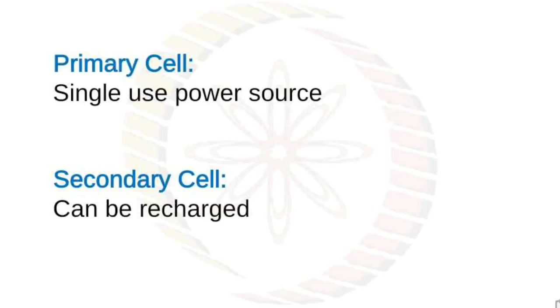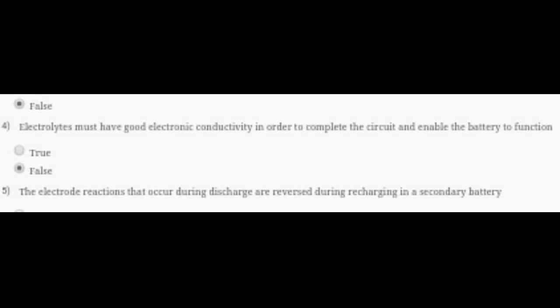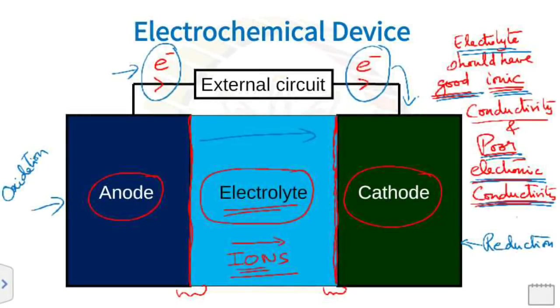Question 4: Electrolytes must have good electronic conductivity in order to complete the circuit and enable the battery to function. This is absolutely False. For the proof, in this picture you can see it's clearly written on the right side that electrolytes should have good ionic conductivity and poor electronic conductivity. So our answer is False.